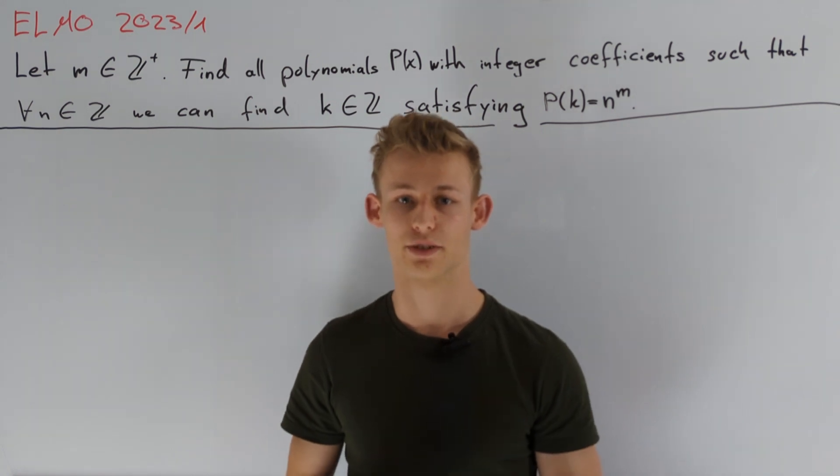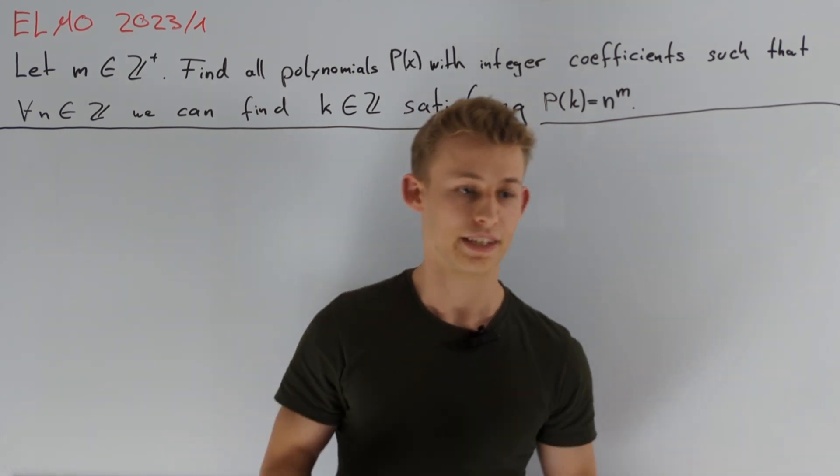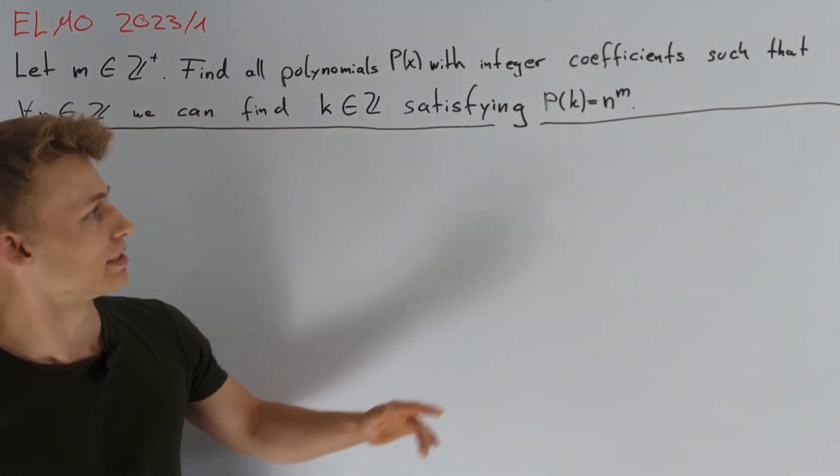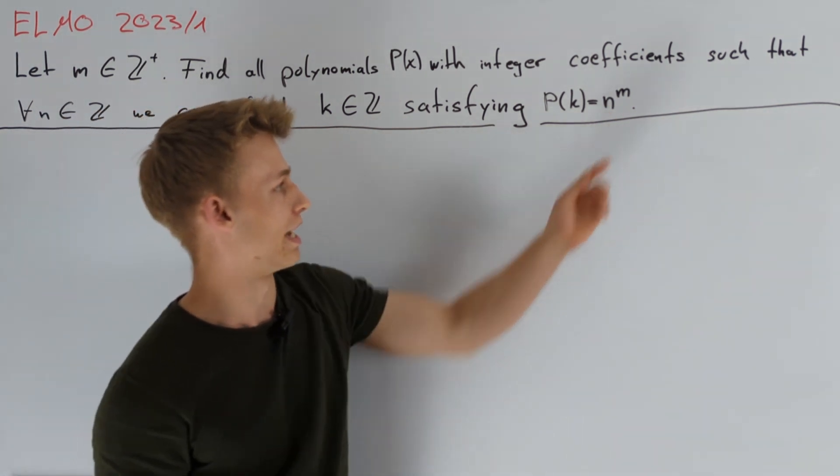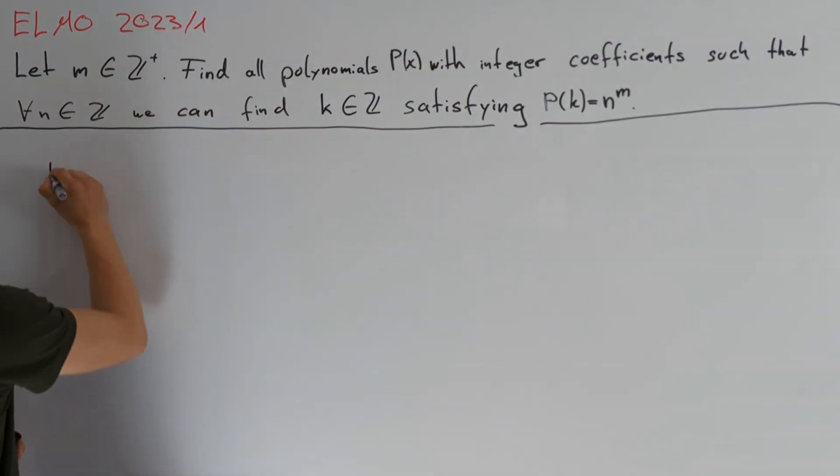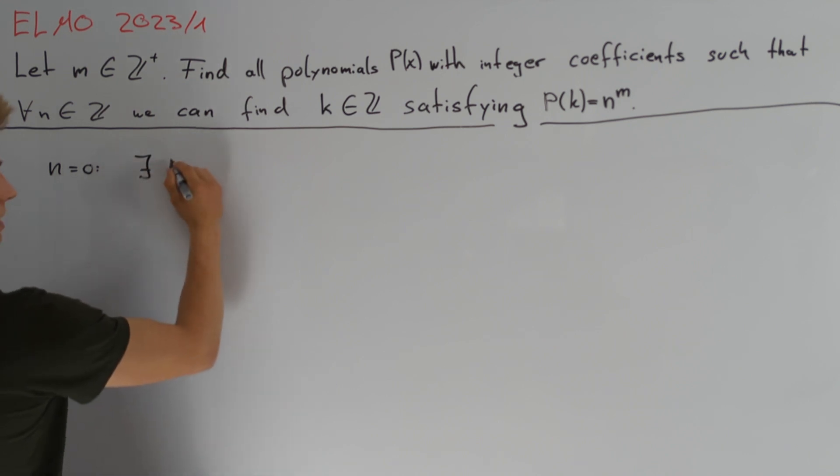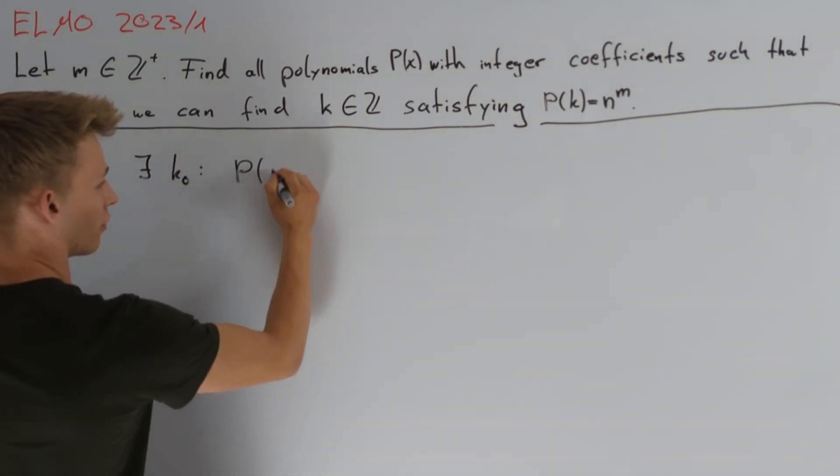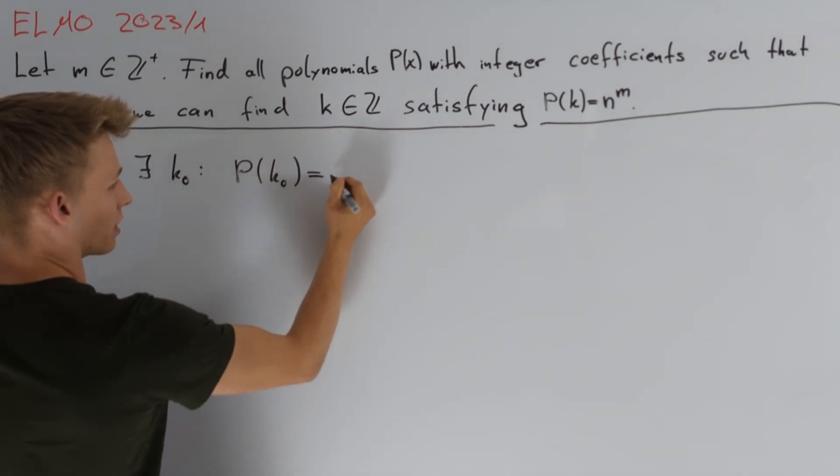When dealing with polynomials it's always a good idea to have a look at zeros. Therefore our first idea is to use this condition for n equals zero and thus we get that there exists some k₀ satisfying P(k₀) equals zero.